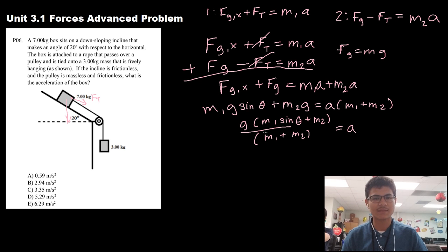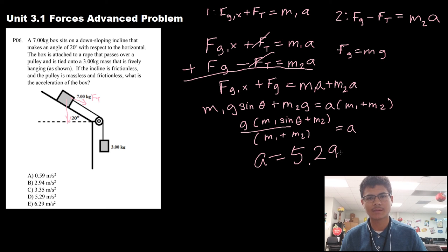m1 times the sine of 20 plus 3, divided by 7 plus 3. So what that should give you is about 5.29 meters per second squared, which is answer choice D.